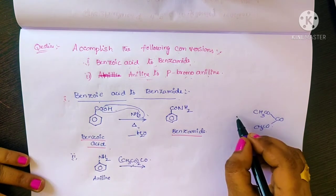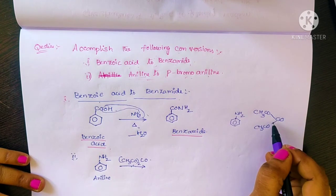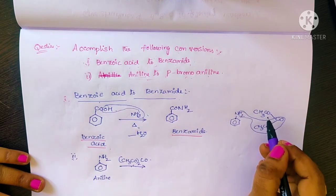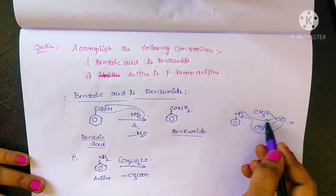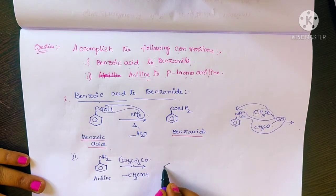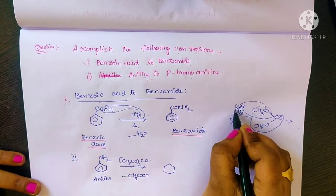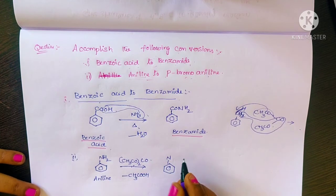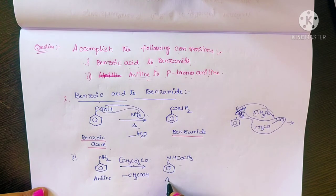In the benzene ring carrying NH2, the reaction takes place. One hydrogen from NH2 is removed in the form of acetic acid (CH3COOH). The remaining group becomes NHCOCH3. This product is called acetanilide. So, aniline reacting with acetic anhydride produces acetanilide.